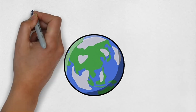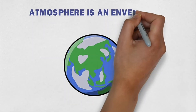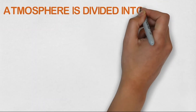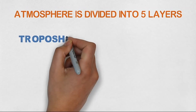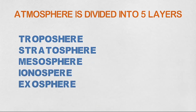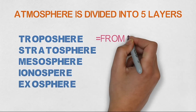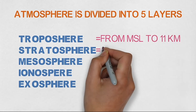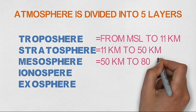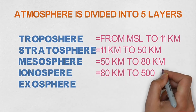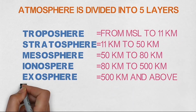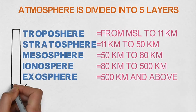Atmosphere is an envelope around the earth's surface. The atmosphere of the earth is divided into mainly five basic layers: troposphere, stratosphere, mesosphere, ionosphere (or thermosphere), and exosphere. The troposphere ranges from mean sea level to 11 km, stratosphere from 11 km to 50 km, mesosphere from 50 km to 80 km, ionosphere from 80 km to 500 km, and exosphere above 500 km. Earth's atmospheric layers start from troposphere and end at exosphere.